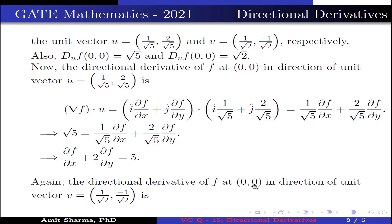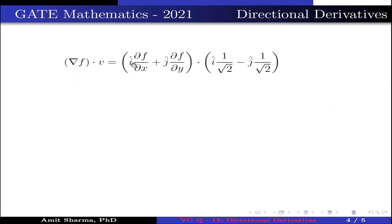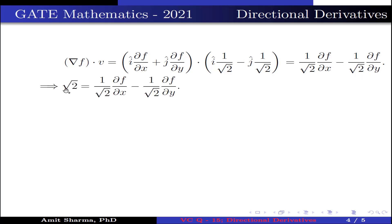Again, the directional derivative of f at (0,0) in the direction of unit vector v = (1/√2, -1/√2) is ∇f · v, which is written as (i · ∂f/∂x + j · ∂f/∂y) · (i · 1/√2 - j · 1/√2). The dot product gives 1/√2 · ∂f/∂x - 1/√2 · ∂f/∂y.